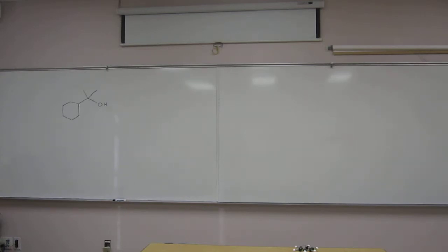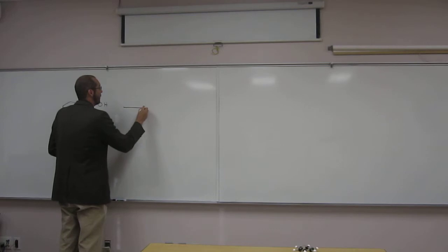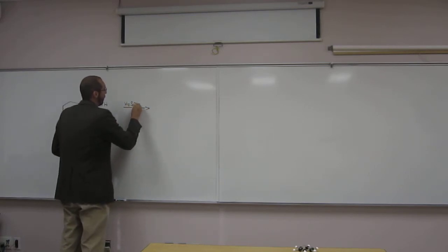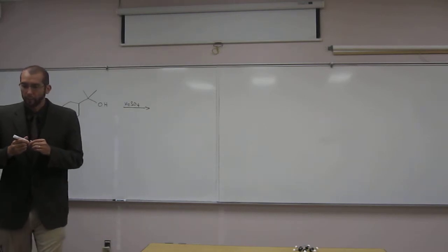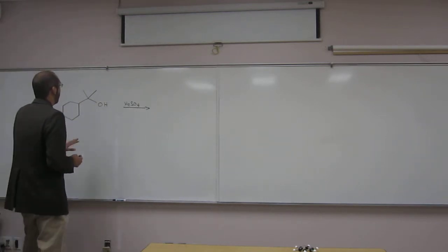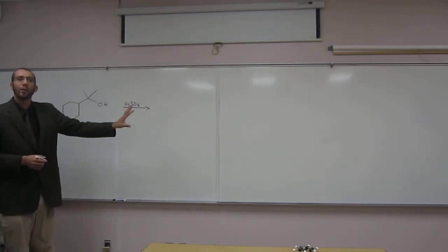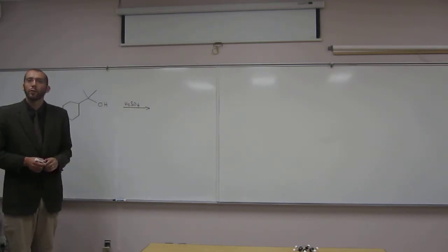Do you guys recall that? So if we treat this with sulfuric acid, we're going to make the E1 intermediate, which is the carbocation. So what is the carbocation we're going to make? Do you guys have an idea or should I draw a mechanism for you guys?